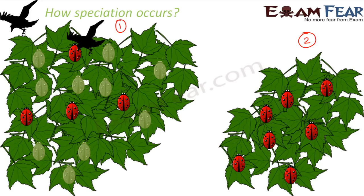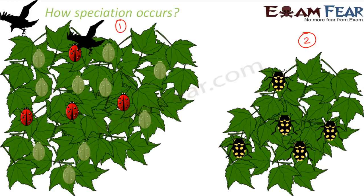In each locality there will be variations due to mutations, some migration as new beetles come from outside, and possibly genetic drift where some accidental event increases the frequency of certain beetles. All these things are happening in each locality over a long time, but beetles in locality 1 are not interacting with beetles in locality 2. After a long, long time, it is seen that beetles in locality 1 and beetles in locality 2 cannot reproduce with each other. Gradually, the beetles in locality 2 became completely different from the beetles in locality 1.